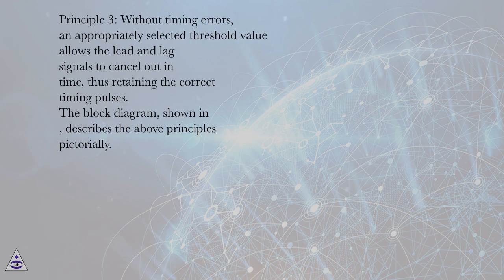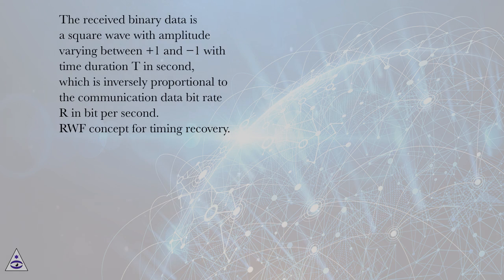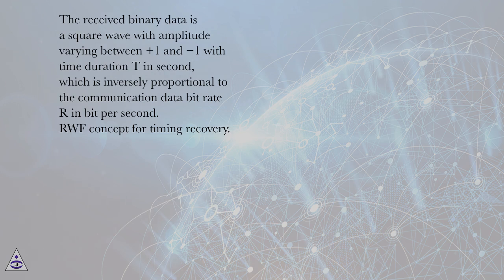The block diagram describes the above principles pictorially. The received binary data is a square wave with amplitude varying between +1 and -1, with time duration T in seconds, which is inversely proportional to the communication data bit rate in bits per second.